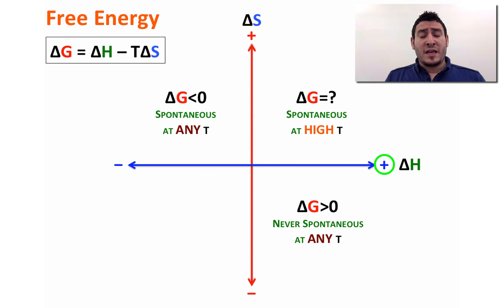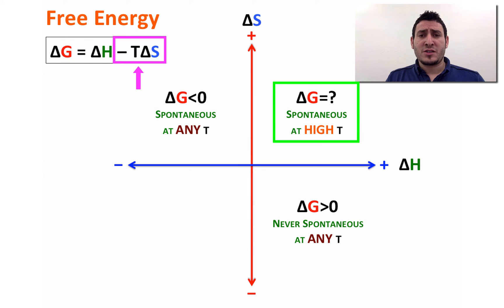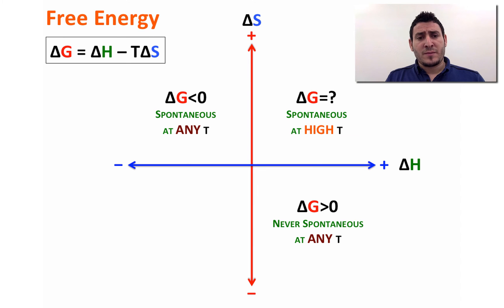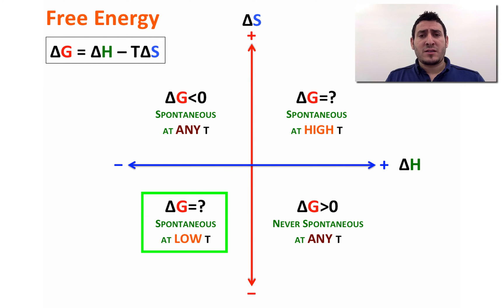If ΔH is positive and ΔS is positive, the sign of ΔG depends on the temperature. ΔG will be negative only at high temperatures, because the negative term of ΔG will dominate, and therefore the process will be spontaneous only at high temperatures. If both ΔH and ΔS are negative, ΔG will be negative only at low temperatures.